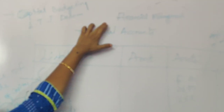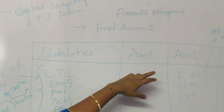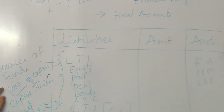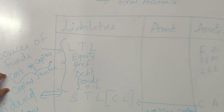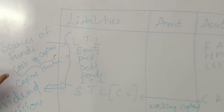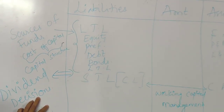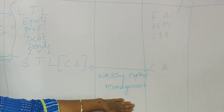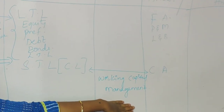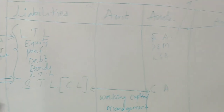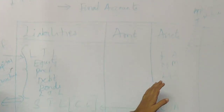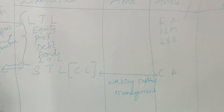Your entire financial management is divided into five units. Unit one covers financial management goals. Unit two covers capital budgeting or long-term investment decisions. Unit three covers cost of capital and capital structure. Unit four covers dividend decisions, and unit five covers working capital management. This is briefly about your financial management and what we are going through in the coming sessions.